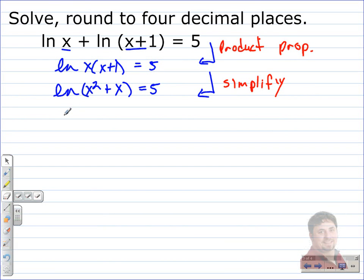The next thing we're going to do is write it in exponential form. Remember, this is the number e. So this would be like a base e over here. So we're going to write this as e to the fifth. And on this side, that's just going to leave us with the x squared plus x. From this line to this line, we just wrote it in exponential form.